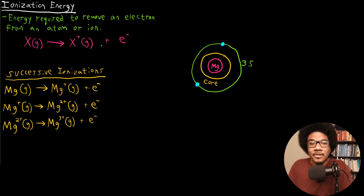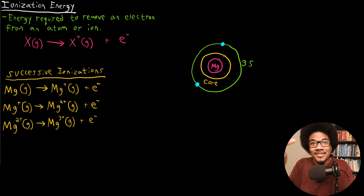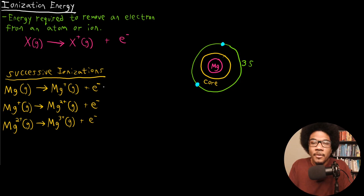To look at ionization energy with a specific example, let's look at magnesium and three successive ionizations. This means ionizing the species and then continuously ionizing it further. We have the formation of the magnesium cation, then another ionization forms the magnesium 2+ ion, and then ionizing that forms the magnesium 3+ ion. I want to highlight these first three successive ionizations to understand the properties of ionization energies.